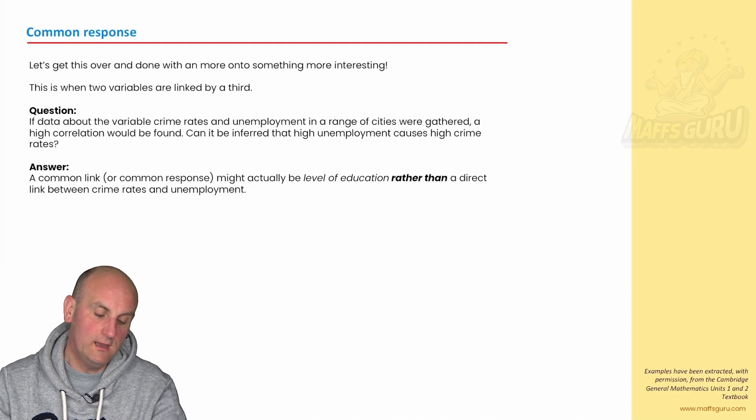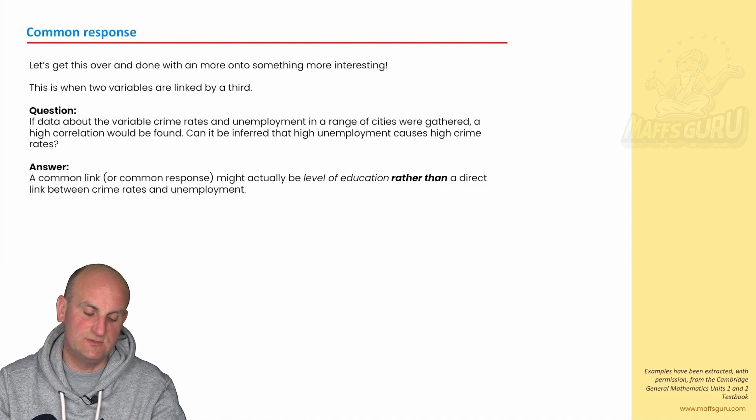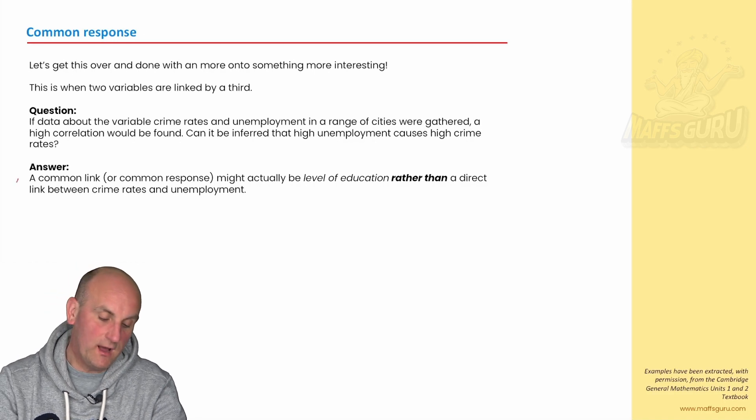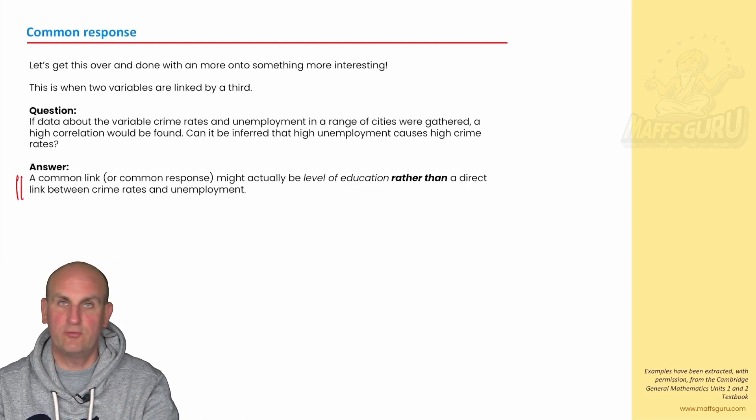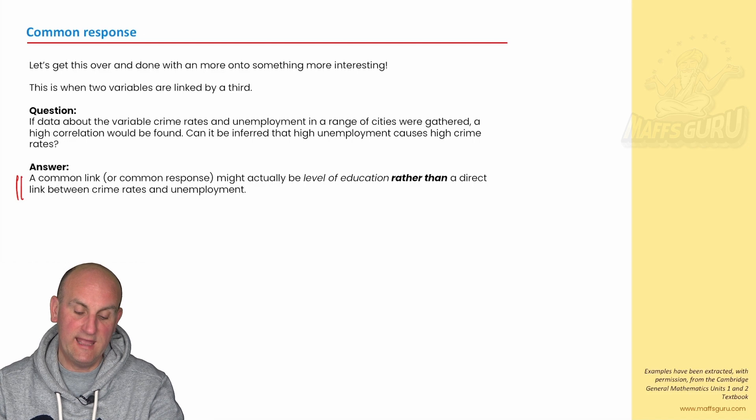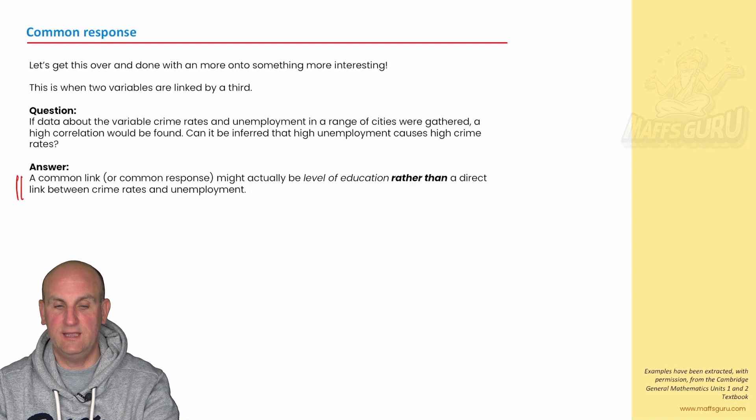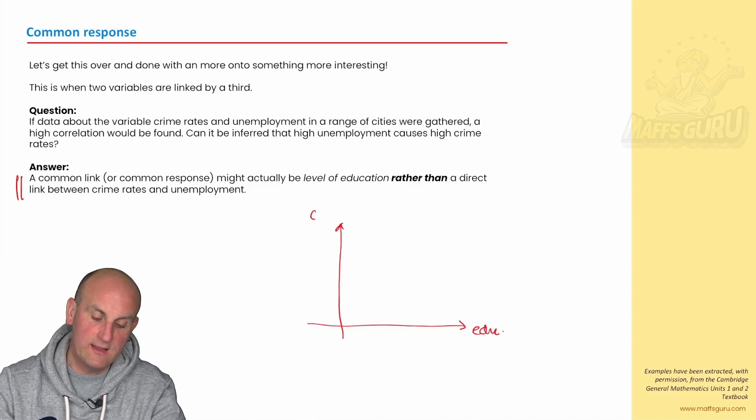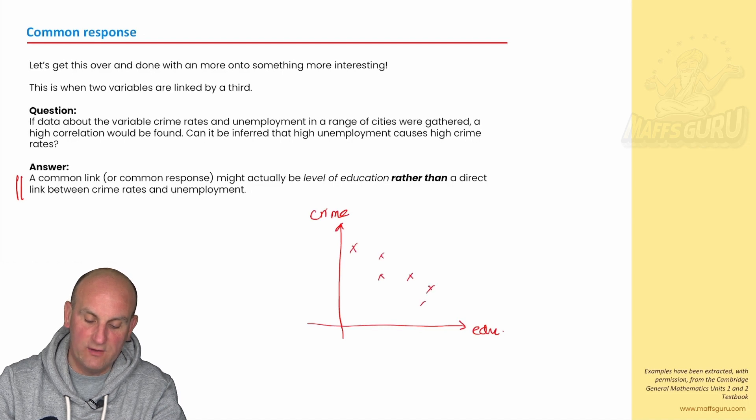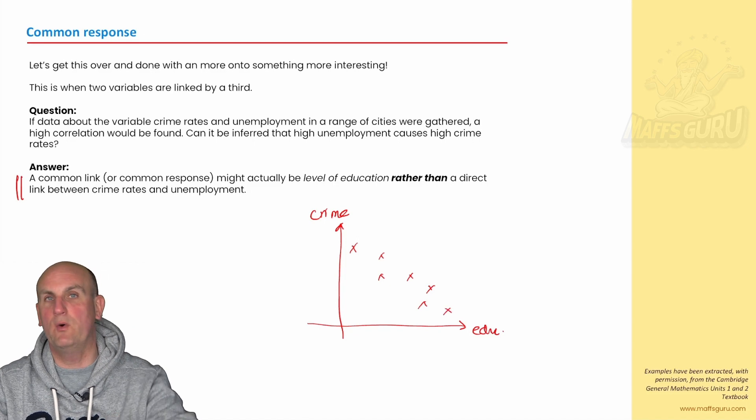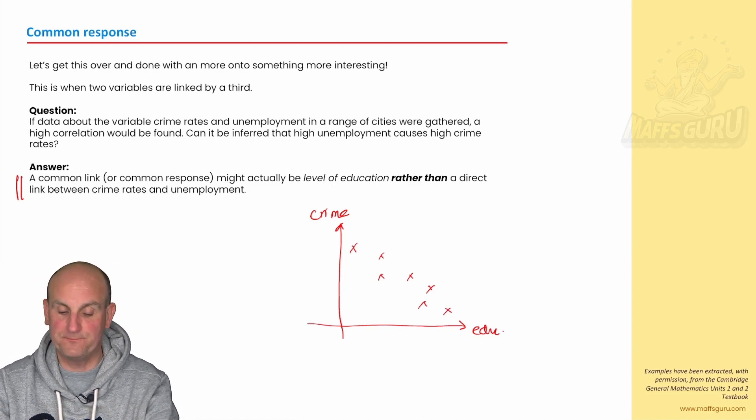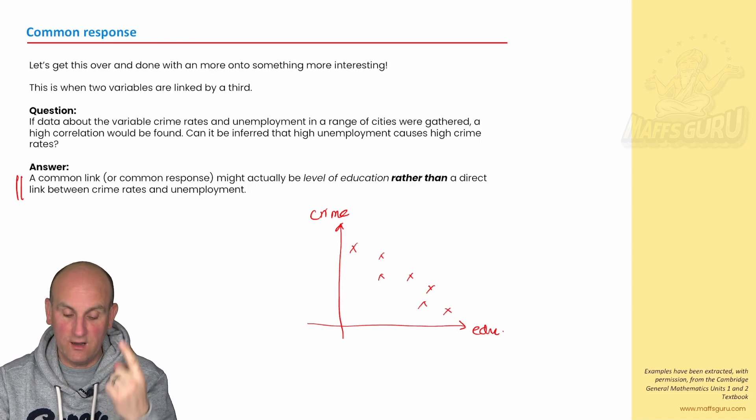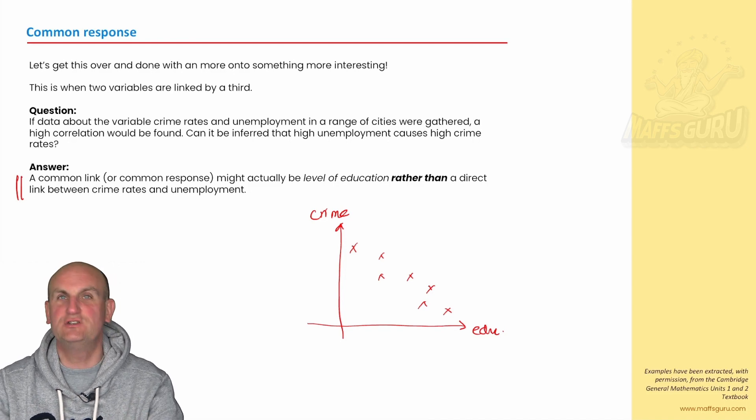A common response in that situation sounds like there's only one thing there. So, a common response would be temperature. As the temperature's going up, more people would buy hats to protect their heads and more people buy ice creams to keep themselves cool. That's what we're very much looking for here in this particular section. If data about the variable crime rates and unemployment in a range of cities were gathered and a high correlation would be found, can it be inferred that high unemployment causes high crime rates? Well, maybe. What could link unemployment and crime rates? Sadly, it could be education level. So, education may be a common response. As education increases, as our level of education increases, our level of crime decreases. We don't always have to have things sloping up. They can slope down. So, as we are more educated, theoretically speaking, we would commit less crime. That there is a common response, one thing. There may be other things, but in this situation, let's just assume it was education.